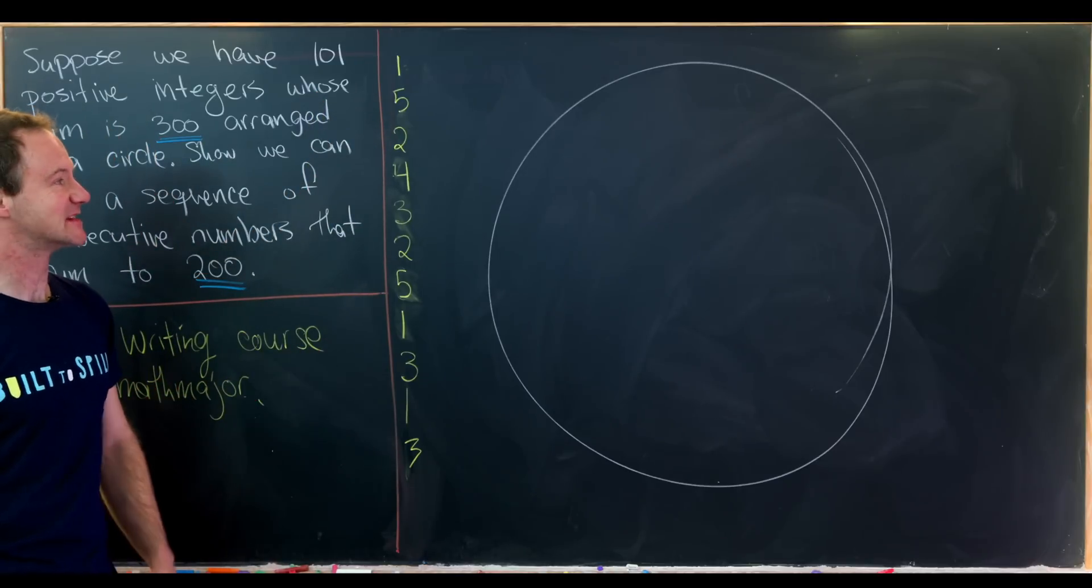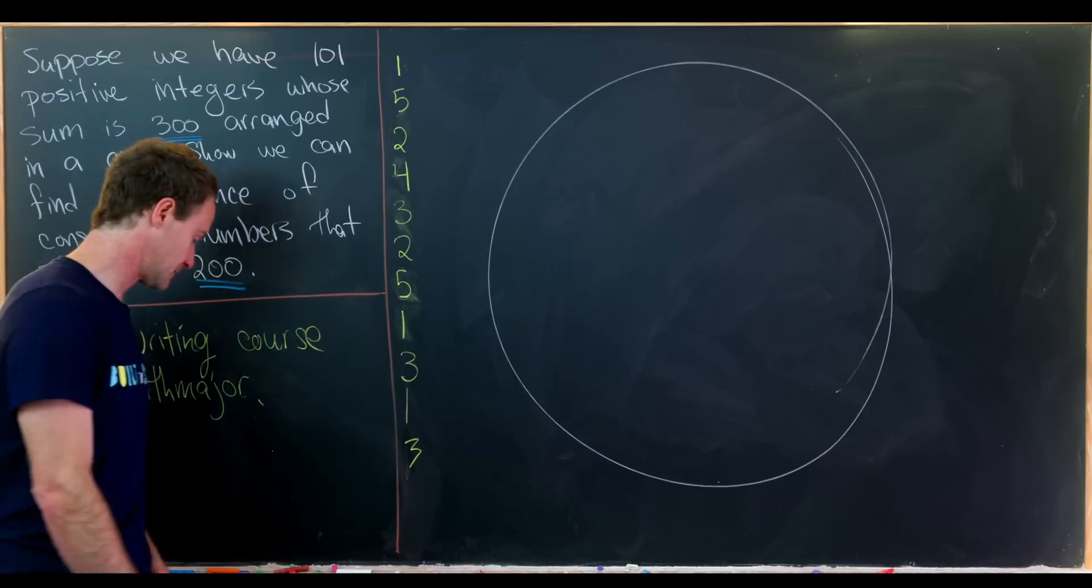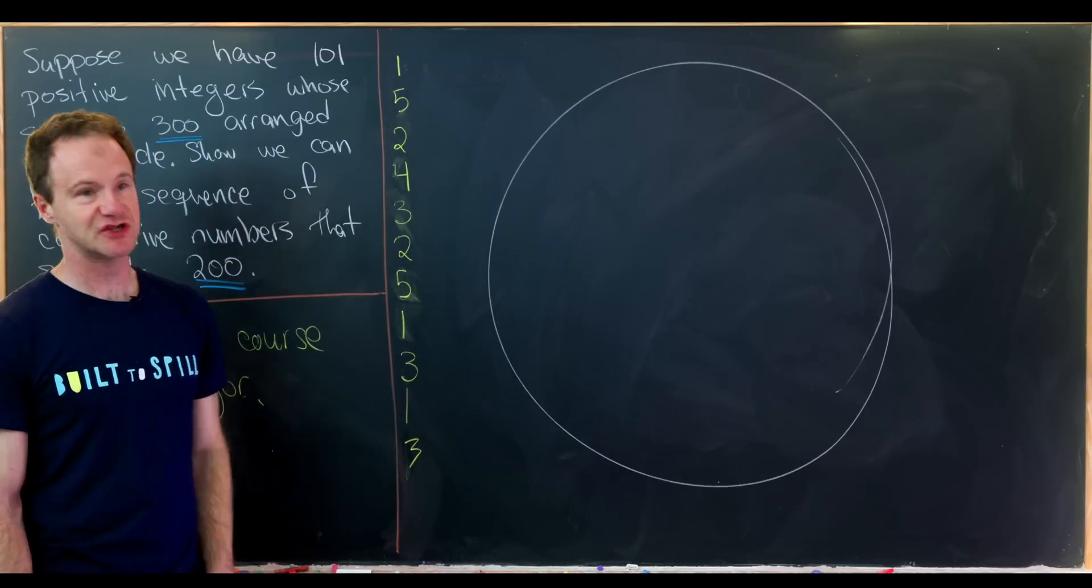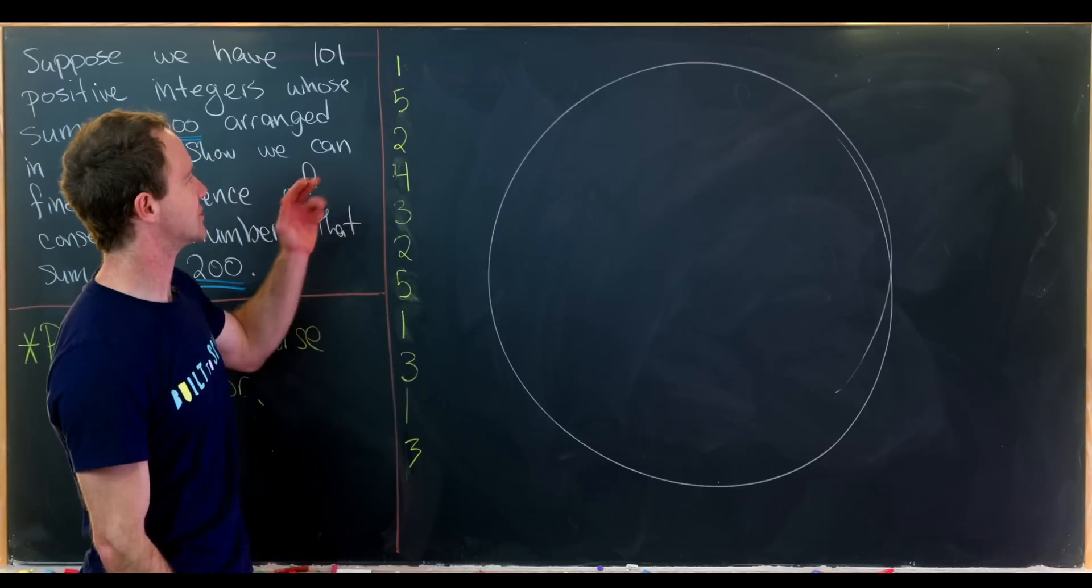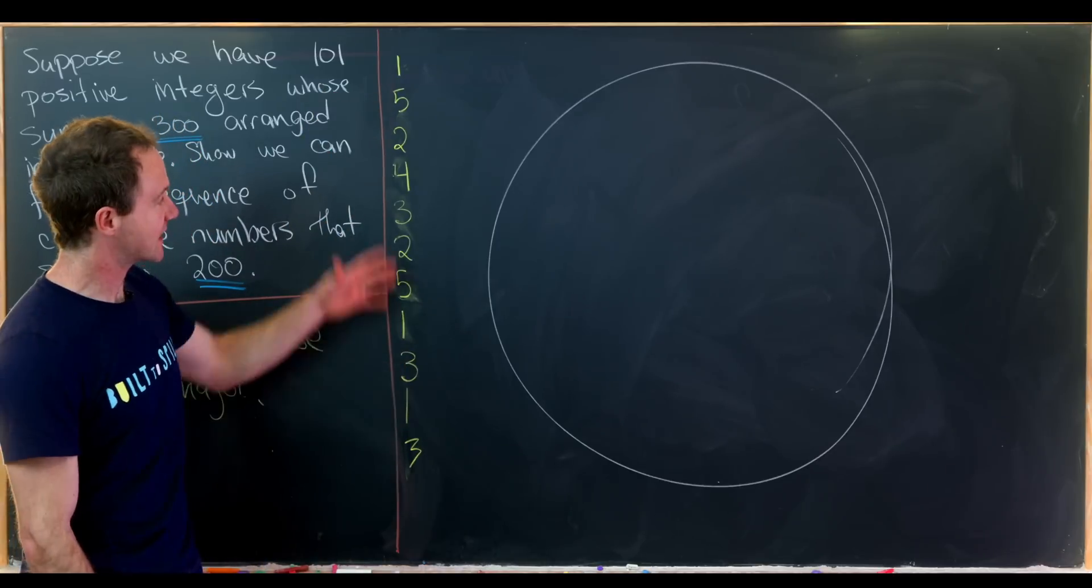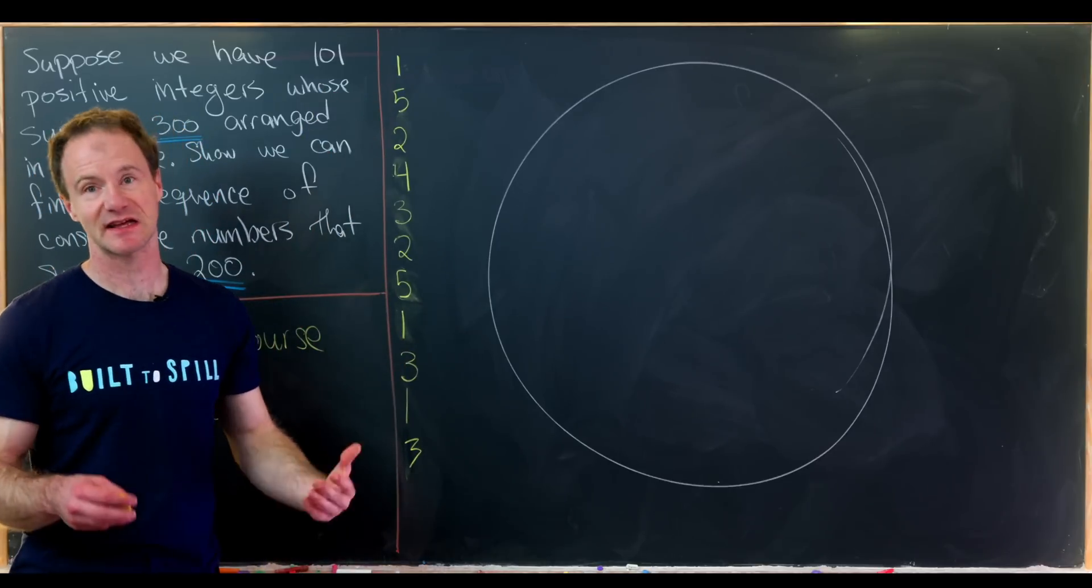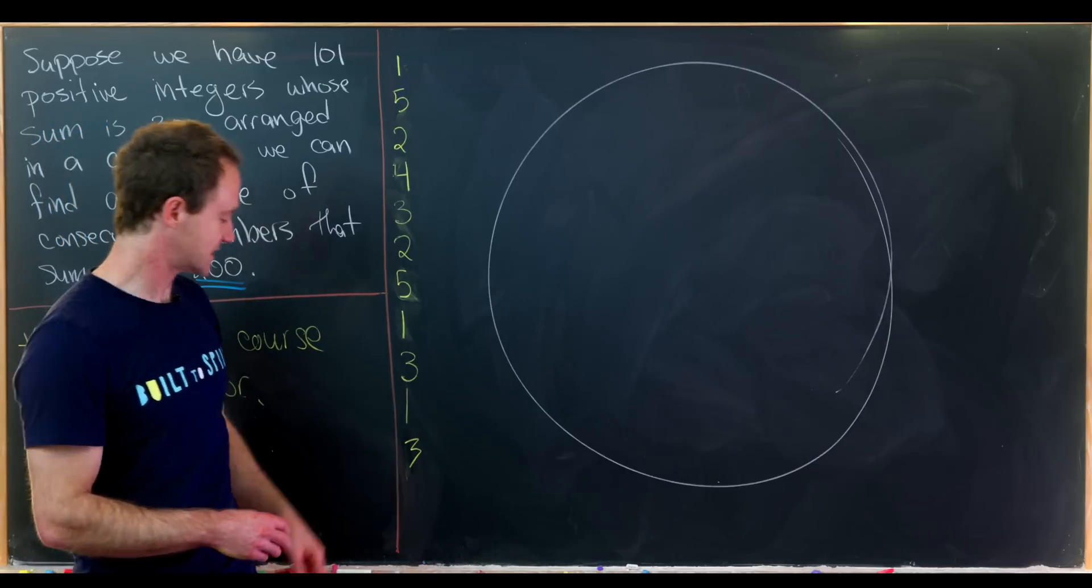And now we're going to take these 11 numbers and arrange them in a circle. We don't have to arrange them in any sort of order around this circle, but I will arrange them kind of in the order that I have written. Just recognize that the way I have written is semi-random.